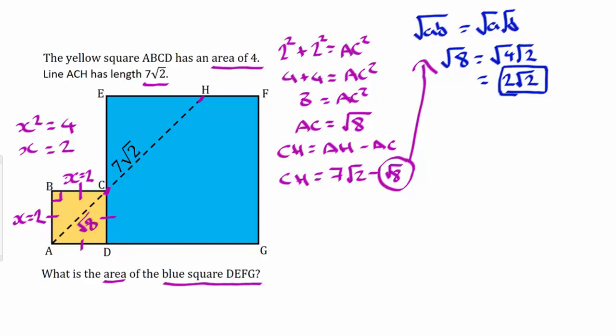We can rewrite CH equals 7 root 2 minus 2 root 2, and 7 root 2 minus 2 root 2 is just 5 root 2. So we can update our diagram again. 5 root 2 is the length CH.